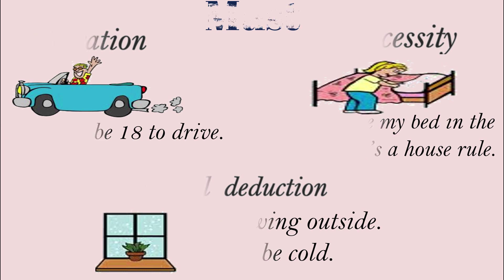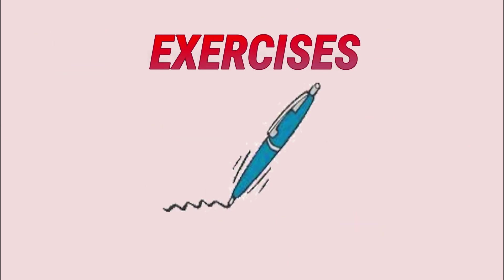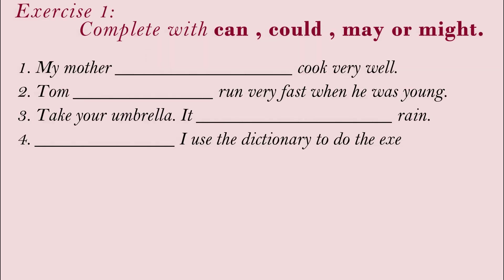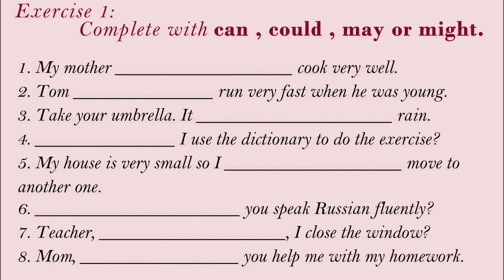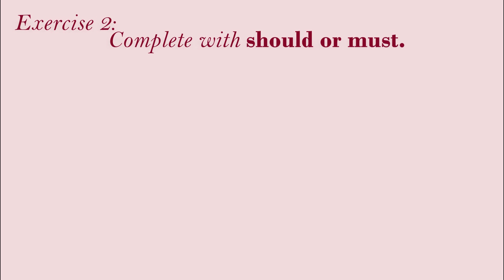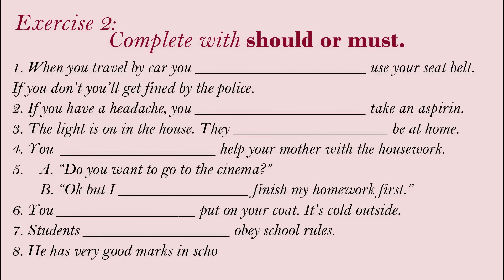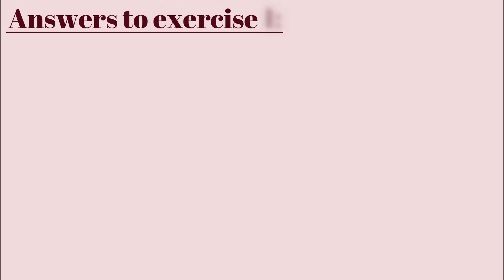Now it's time to practice. Look at exercise one — take your time, look at the situations and fill in the blanks with the right modal. Exercise two asks you to distinguish between 'should' and 'must.' Here are the answers to exercise one: number one — 'My mother can cook very well,' meaning she has the ability to cook very well.